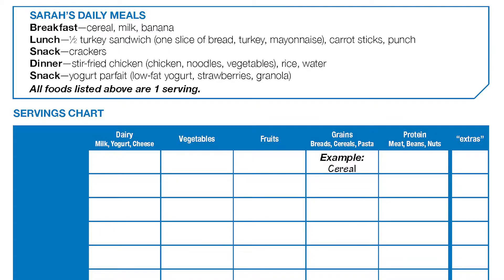Let's go ahead and begin. For breakfast she had cereal, milk, and bananas. In the example, cereal is placed in the grains column — where would you place milk and banana? For lunch, Sarah had half a turkey sandwich which includes one slice of bread, turkey, and mayonnaise.